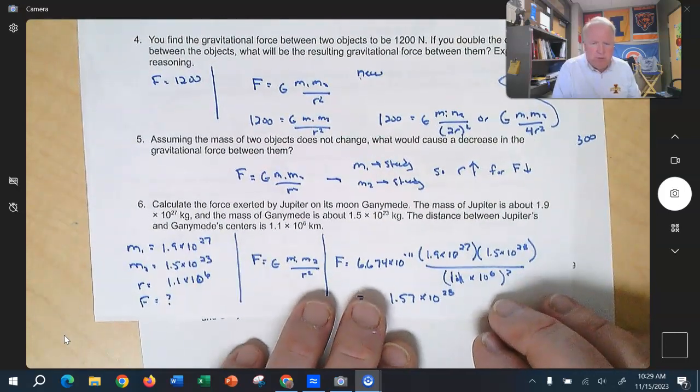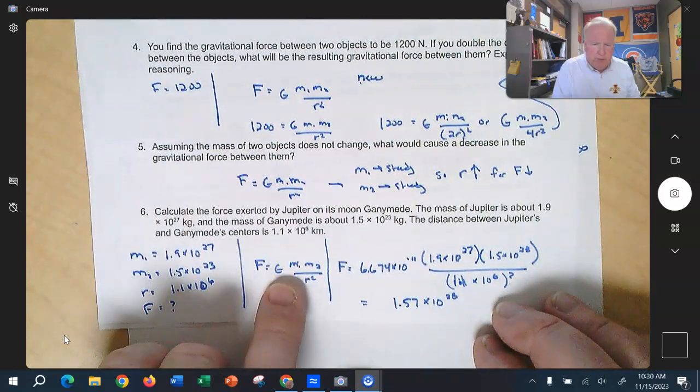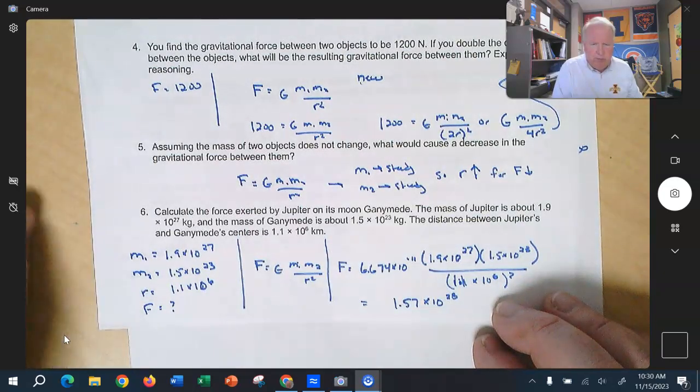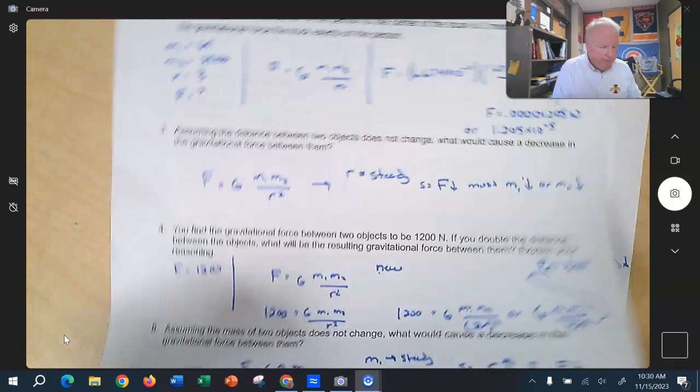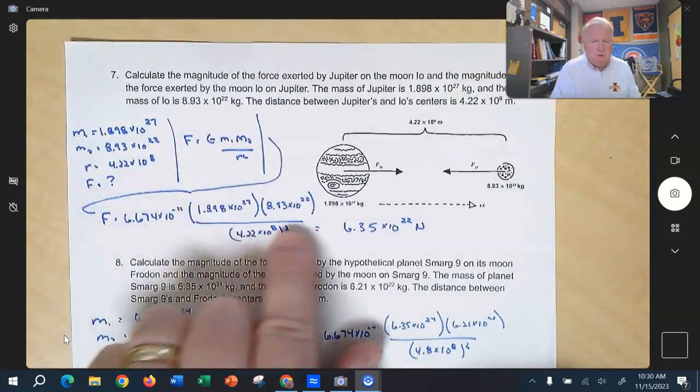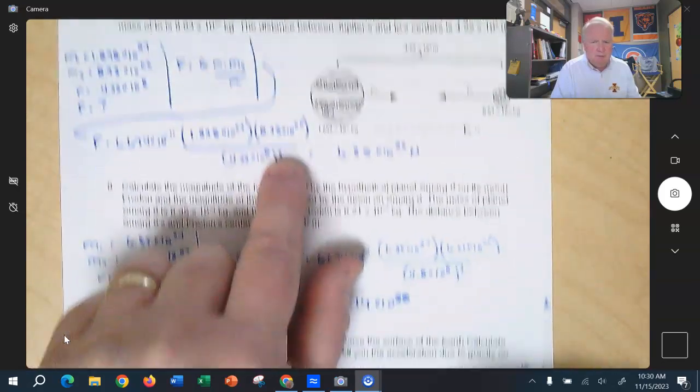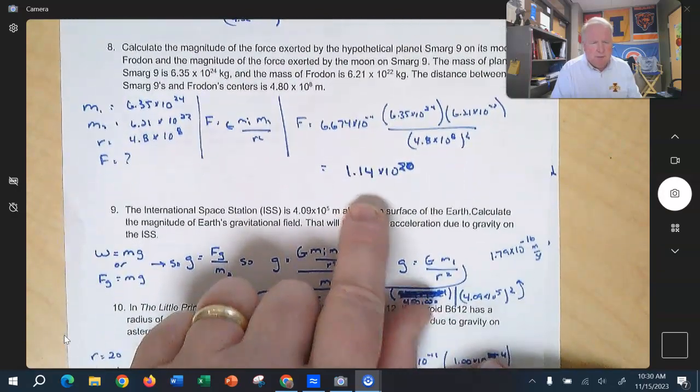All right. The rest of these are really just plug and chug or four-column methods. We're doing the four-column method here. We're writing the equation down. We put these in. We learn how to put the number in to our calculator with the E button. Same thing's true here. So we're just doing the four-column method. Same thing here, four-column method. We're just practicing.